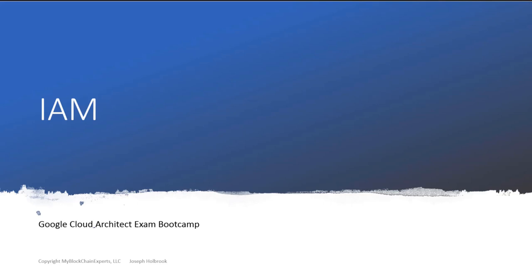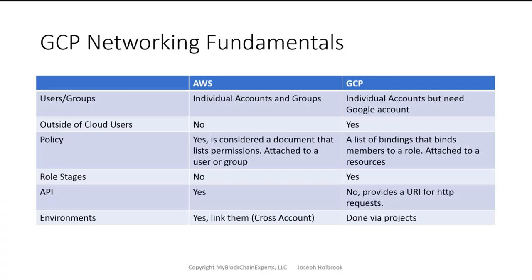Let's talk about Identity and Access Management in Google Cloud with a focus on networking. When it comes to IAM, I want to start by comparing AWS to GCP so folks familiar with AWS can get an idea of where this compares. There are a lot of similarities — with AWS you use individual accounts and groups, but with GCP you also have the ability to use outside users and attach bindings. The API provides a URI for HTTP requests, and that's all done through the project, which is probably the most substantial differentiator.